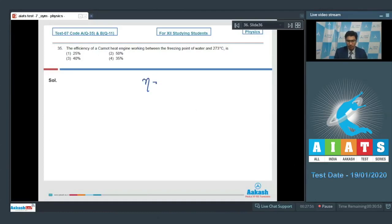The efficiency can be written as 1 minus T low by T high, that is the low and the high temperature. On substituting the given values, this can be written as 1 minus 273 Kelvin divided by 273 into 2, that is 273 degree Celsius has been converted into Kelvin which will be equal to 273 plus 273, that will be 2 times 273.